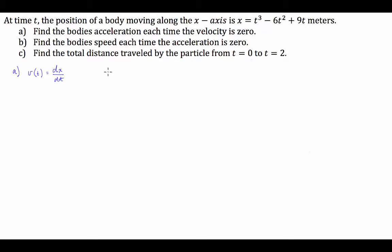In our case, if we take the derivative of our position function, we get v(t) = 3t² - 12t + 9. That's the equation that tells us what the velocity is at any point t in this body's motion. We then have to find the t that makes this equation equal to 0.